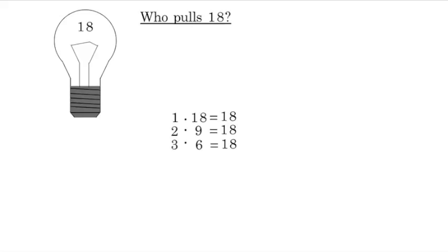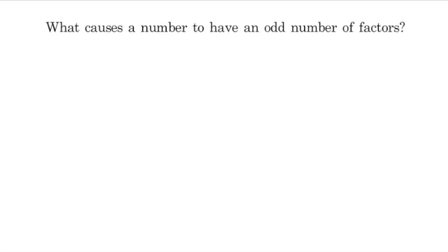So we have to consider what would cause the number to have an odd number of factors. So let's just look at a general number, and we'll call it m, and we can find all of its factors. We can say a times b equals m, and we can say c times d equals m, and we can say e times f equals m. And so far we've found six factors of m, and it seems like every time we find a pair, we get two more factors, leaving us with an even number of factors.